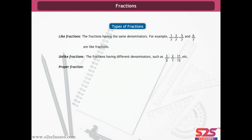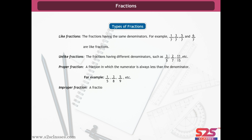Proper fraction: a fraction in which the numerator is always less than the denominator. For example, 1/5, 3/8, 5/9, etc. Improper fraction: a fraction in which the numerator is greater than the denominator. For example, 7/4, 3/2, 12/9, etc.